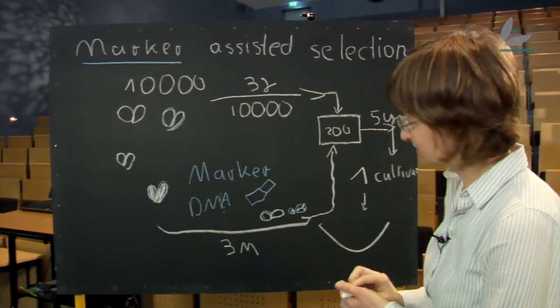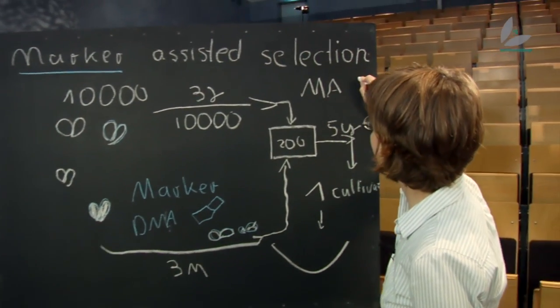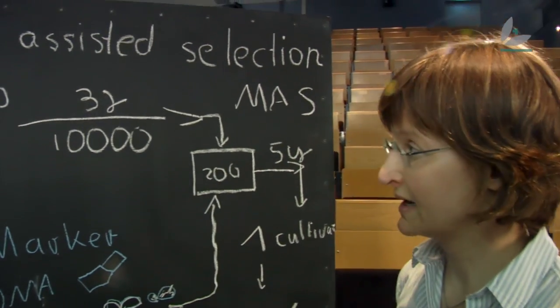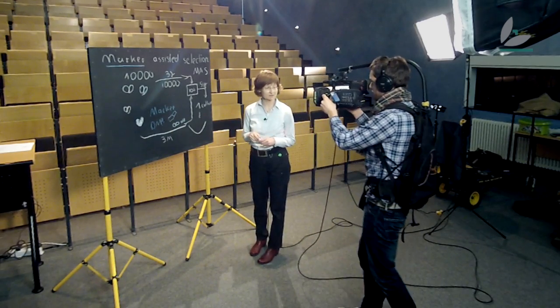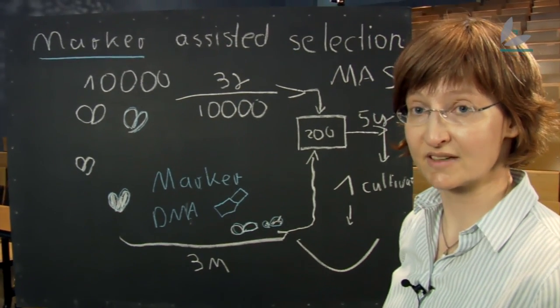The entire process is called marker-assisted selection, and the abbreviation is MAS. You will find that in literature now and then. The methods have already been used in rice to produce new varieties which are tolerant to environmental stresses.